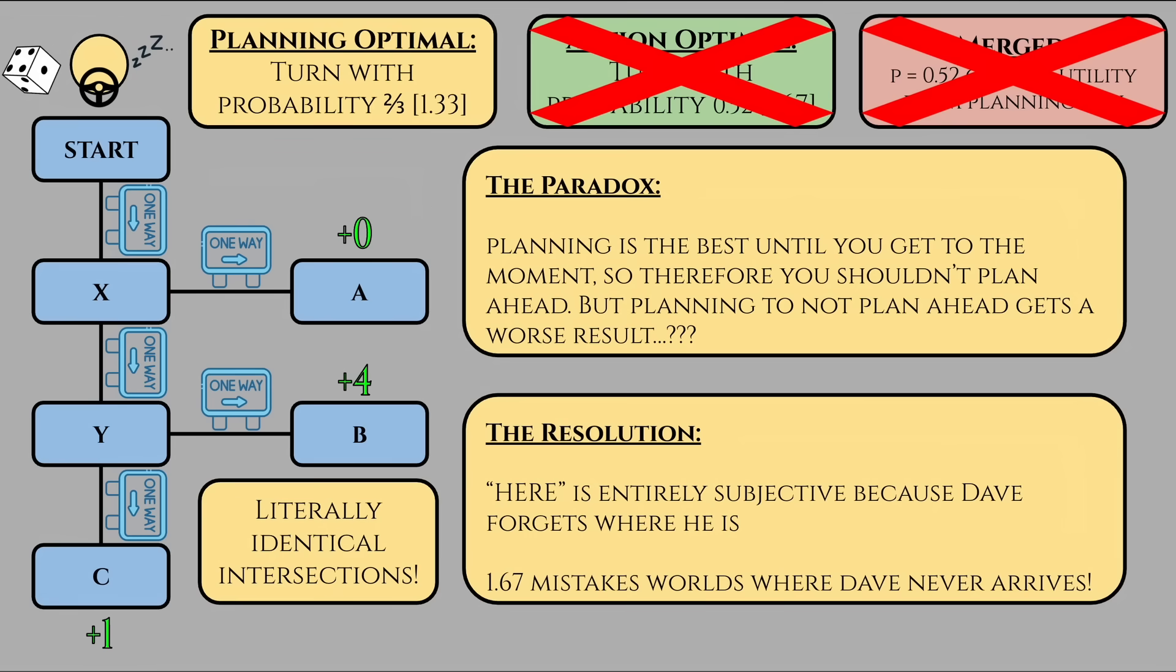This means that even though Dave will always find himself at an intersection in theory, the action stage mindset is inherently invalid. There's no new information in the moment that legitimately changes his plan. Therefore, there is only one vantage point that matters, the ex ante, or the planning optimal solution.